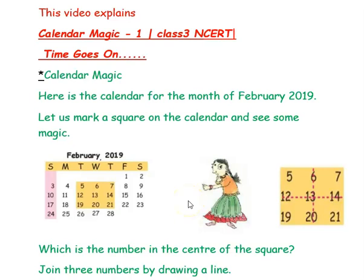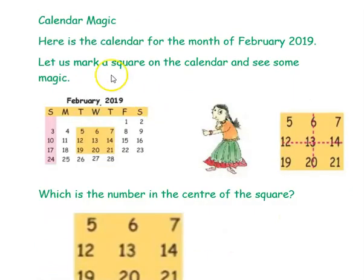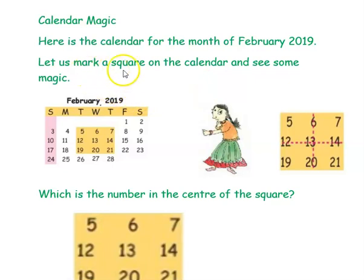Hi, we are from At Home Tuition. In this video we are going to see few magics on the given monthly calendar. The question goes like this — the heading is Calendar Magic. Here is the calendar for the month of February 2019. Let's mark a square on the calendar and see some magic.